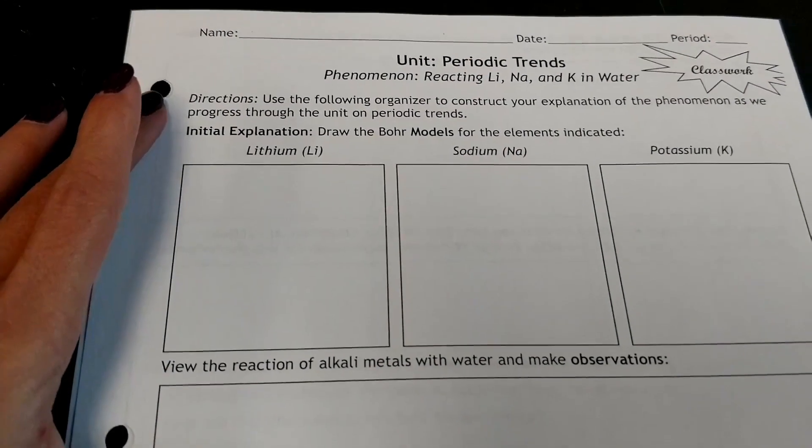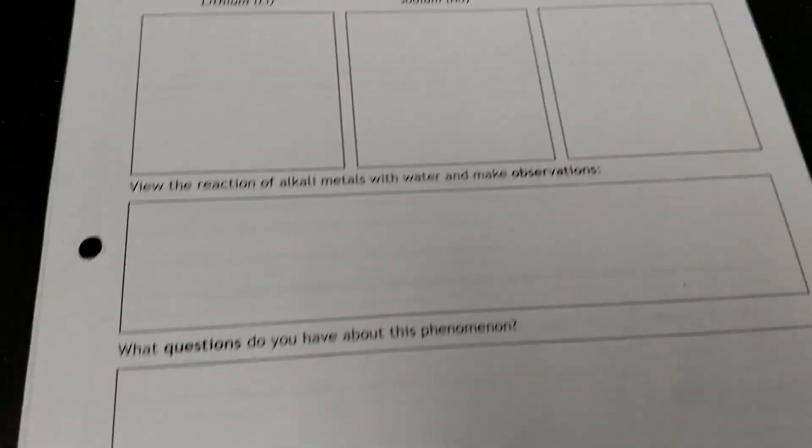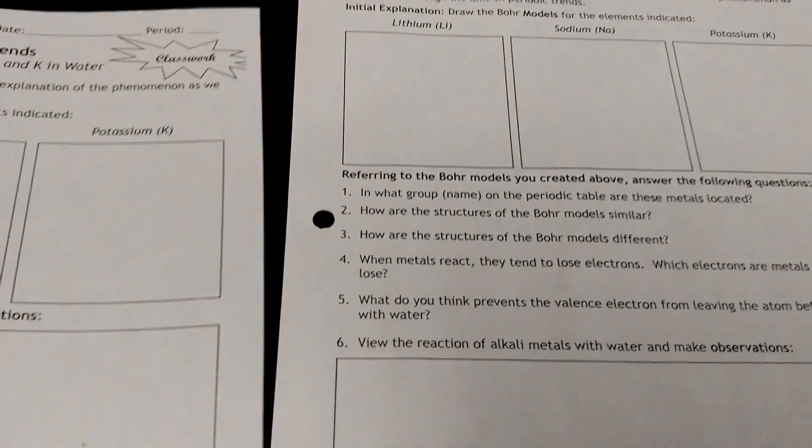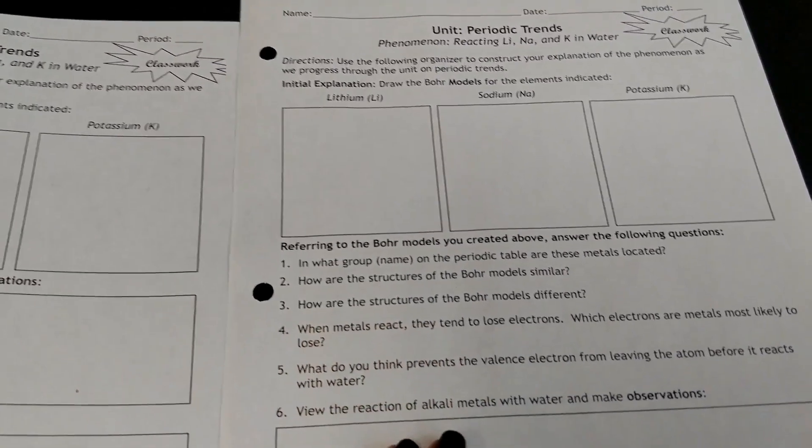I also did this same phenomenon with my CP students, and I thought it'd be helpful for you to see the difference between a college-prep and an honors phenomenon — though they aren't really all that different. The same exact phenomenon was used; the only difference is that in the CP version, instead of just giving more sections to write in, I gave them more guiding questions — for example, what group are these metals located in, what structural features are similar, what patterns do you notice — to help them draw a conclusion between the patterns they see and the phenomenon.